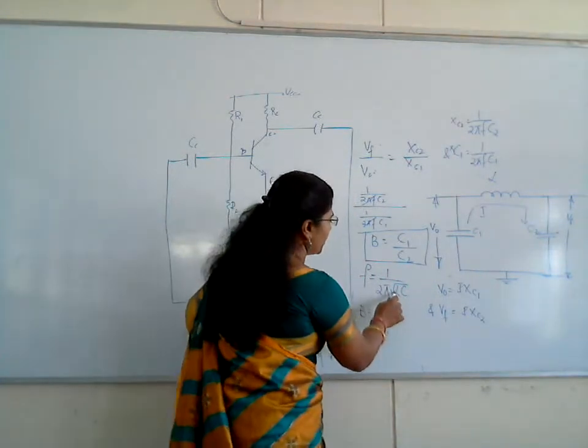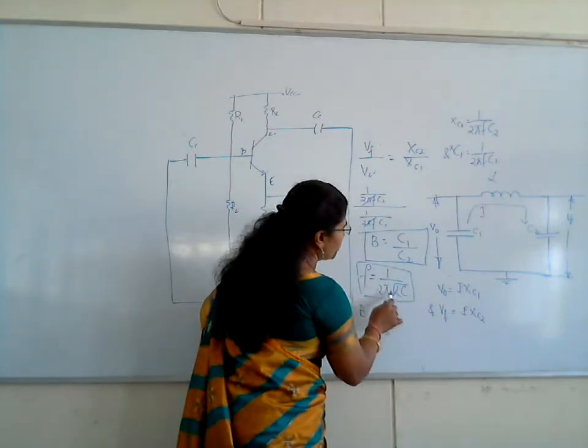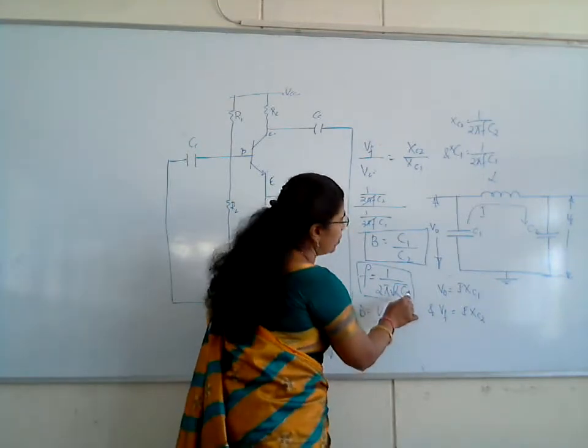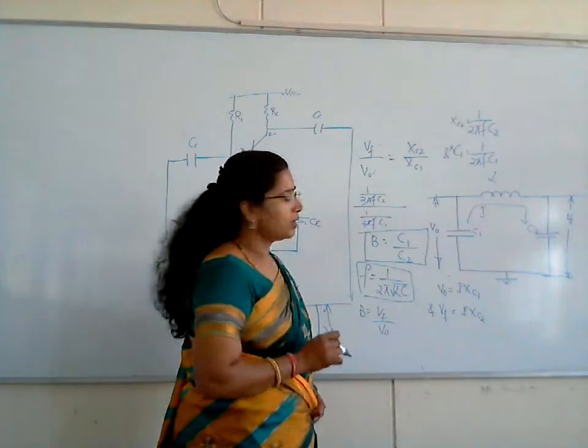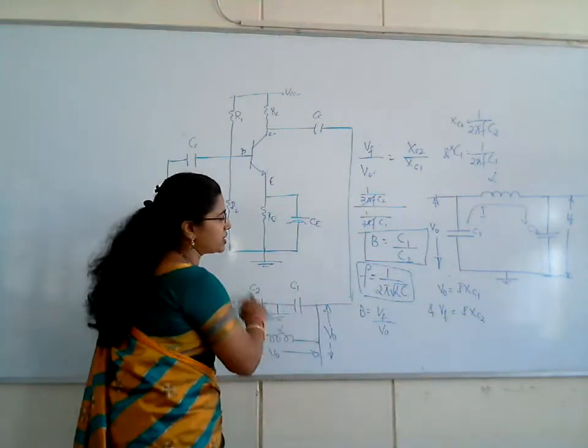With this formula, I have written 1 over 2π√LC. What is the value of C? Because we have two capacitors here, C1 and C2.